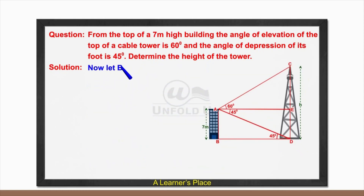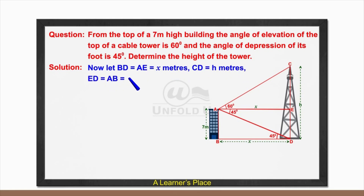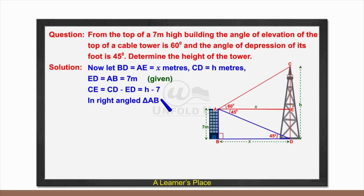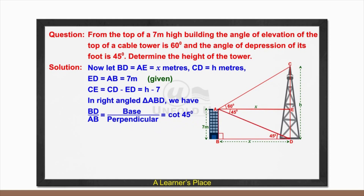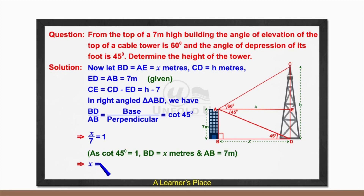Let BD = AE = x meters. CD = h meters, ED = AB = 7 meters (given), and CE = CD − ED = h − 7. In right-angled triangle ABD, BD/AB = cot 45°, which gives x/7 = 1, since cot 45° = 1. Therefore x = 7. — (Equation 1)